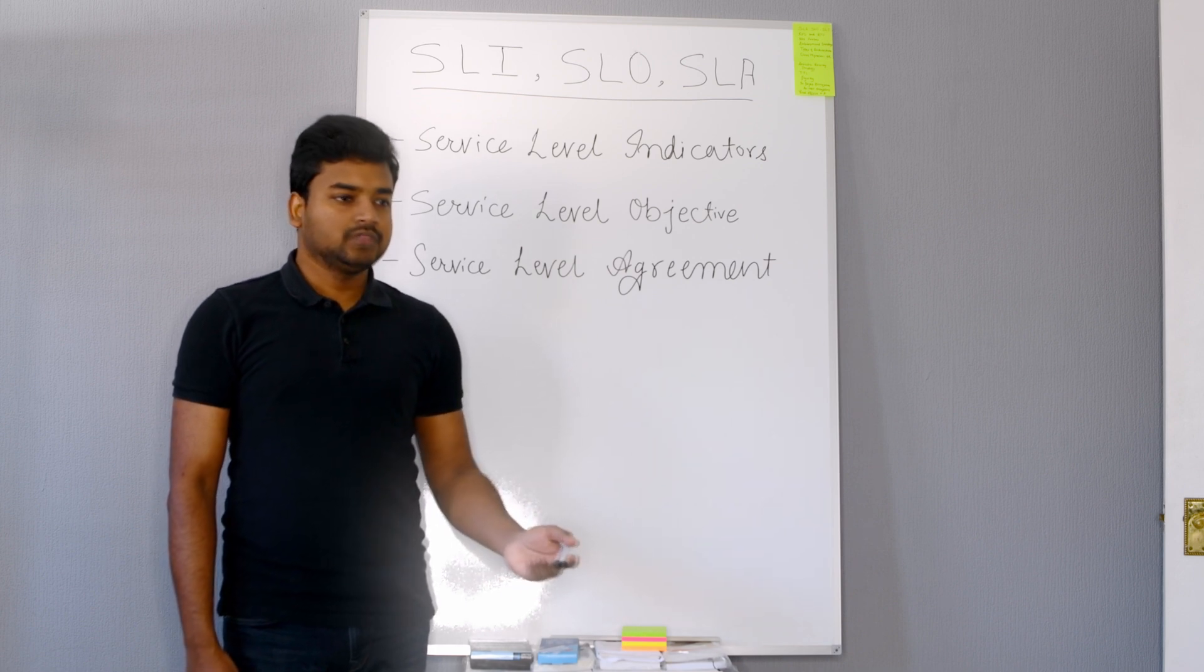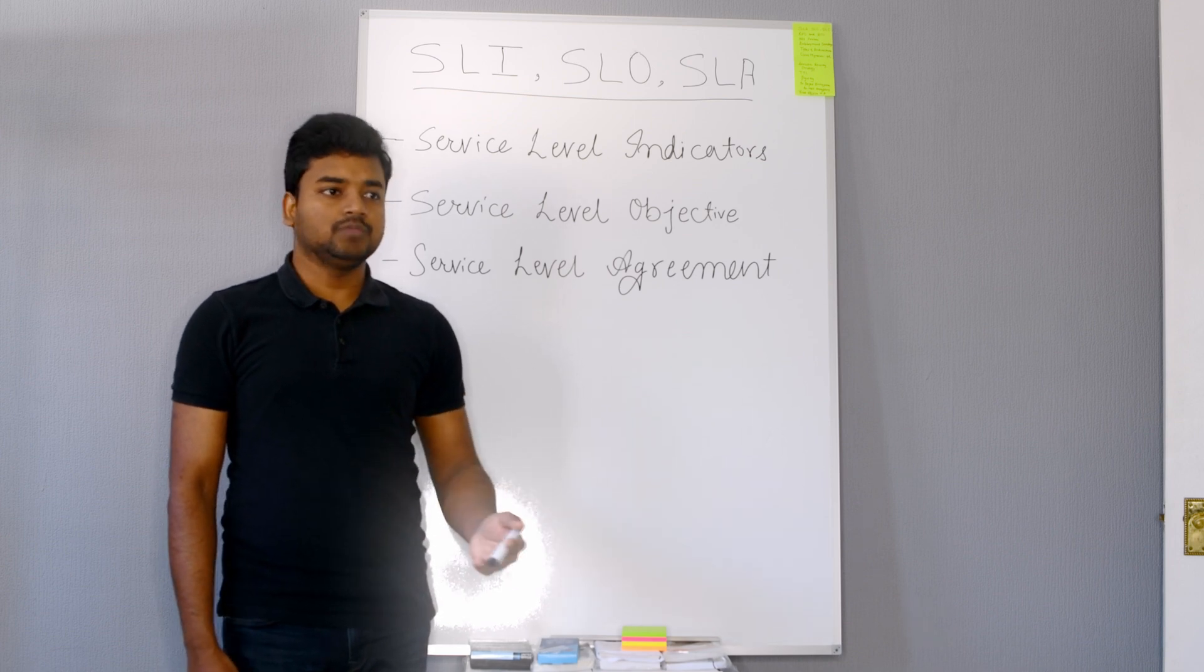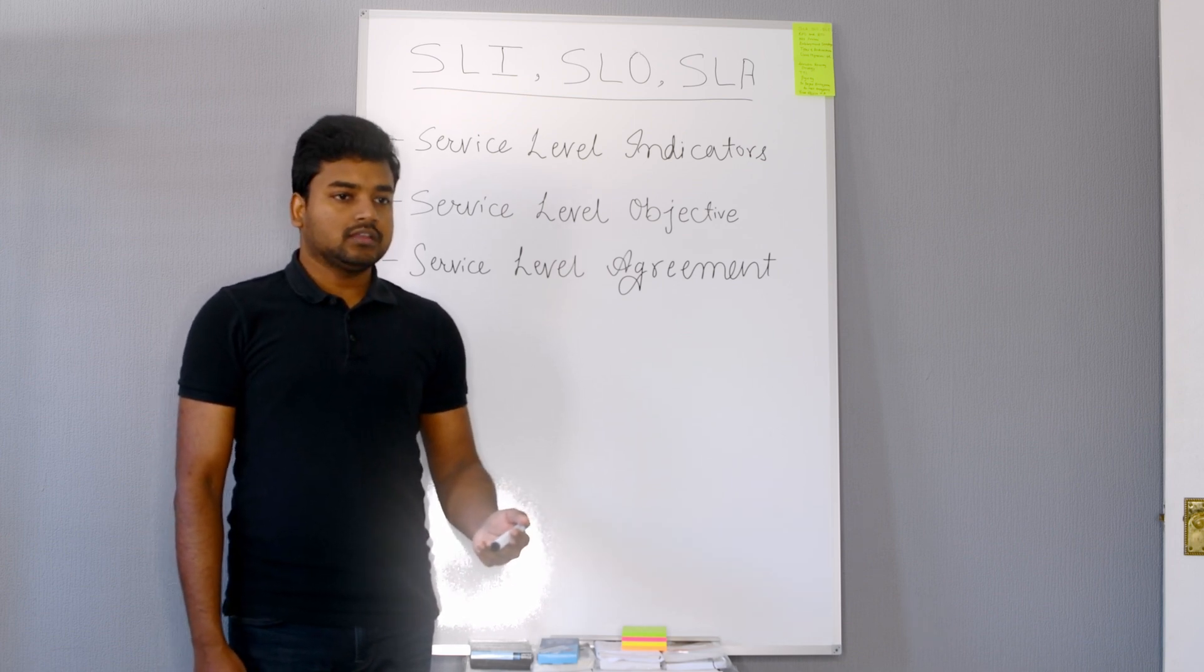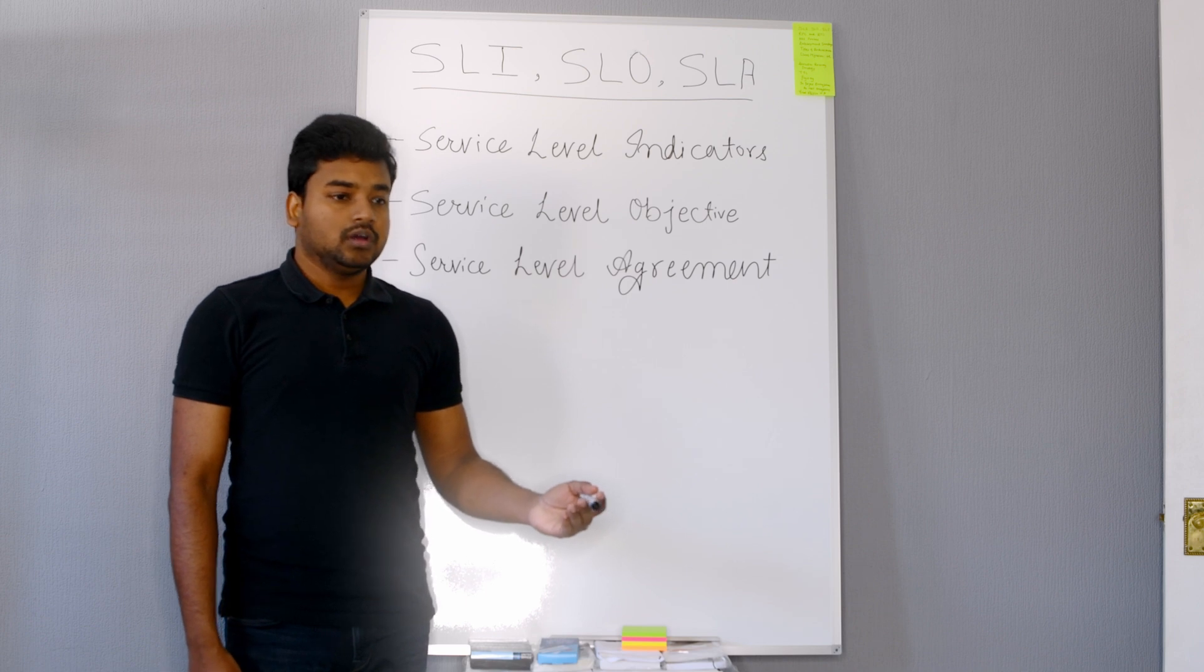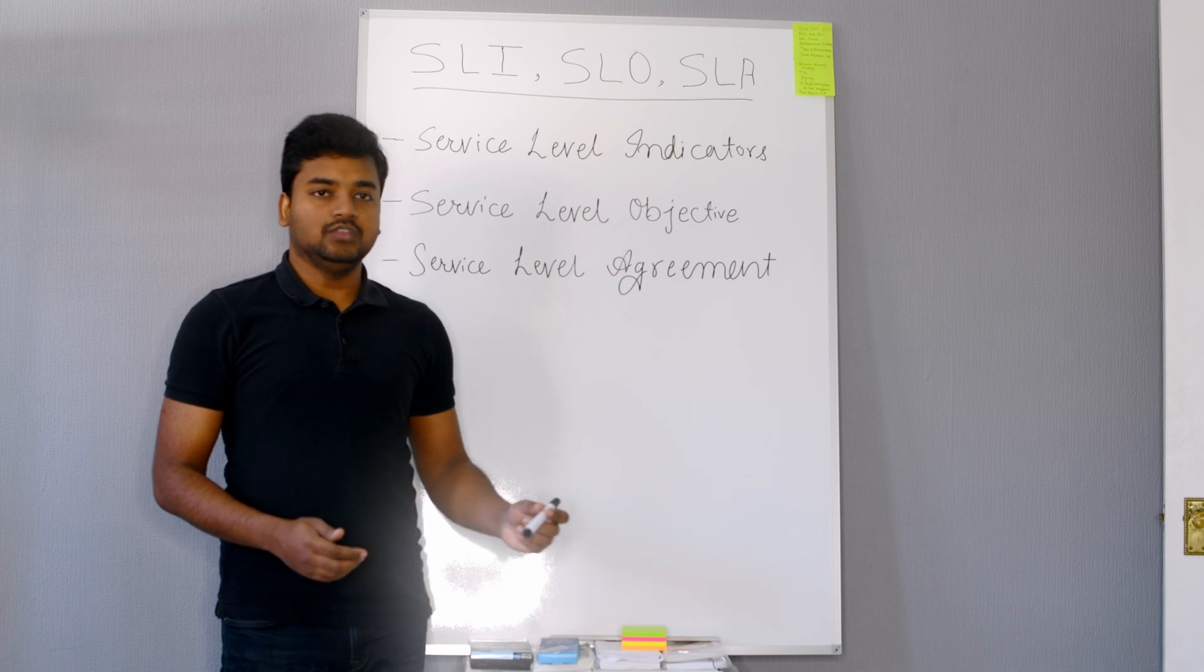In terms of retail, what are my daily orders? How many orders are passing through? How many people are able to successfully put the items in the cart? So it is the real value, the actual numbers is SLI.